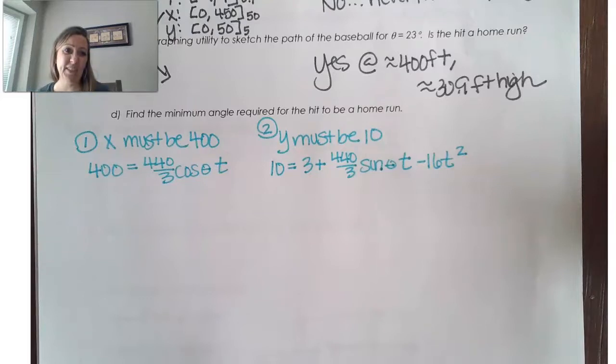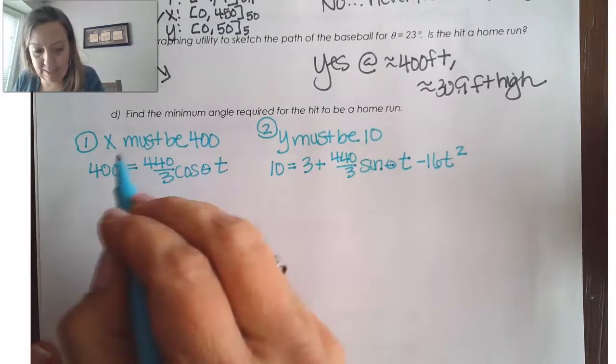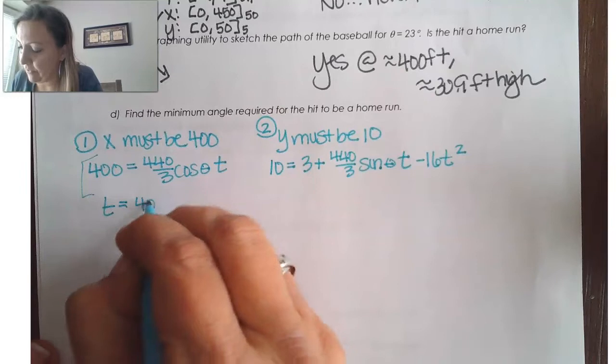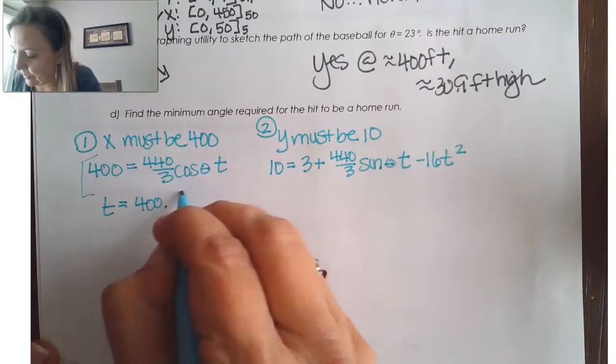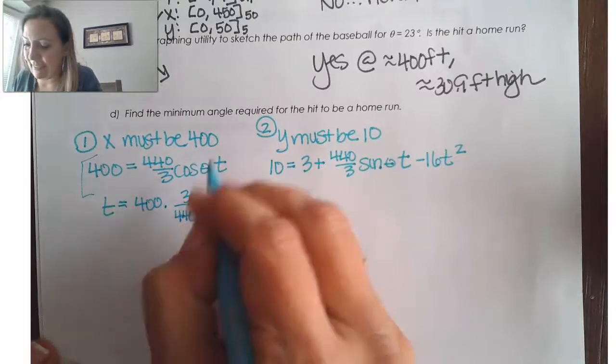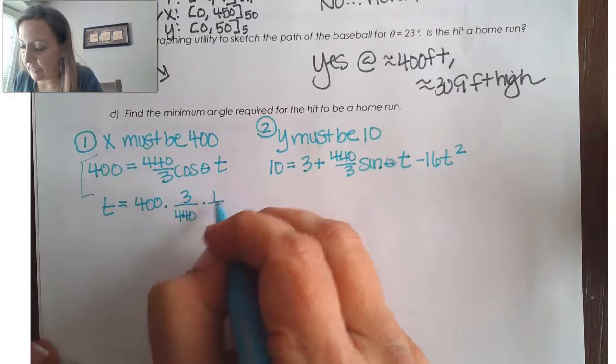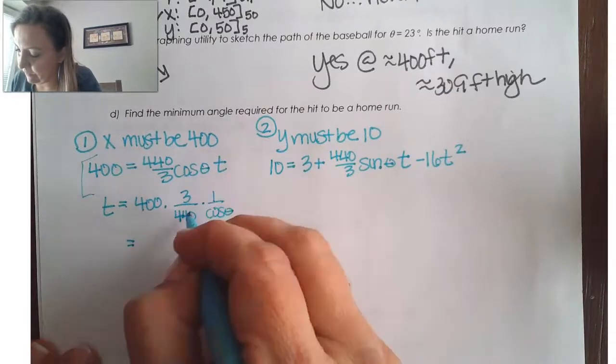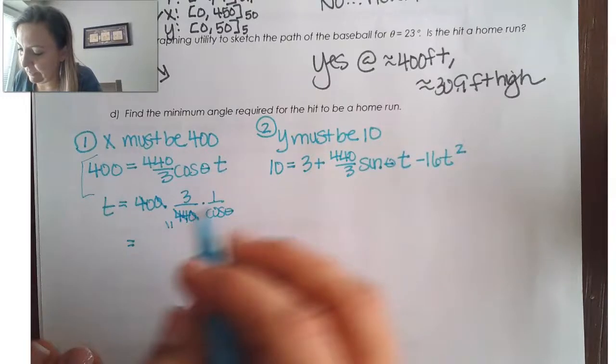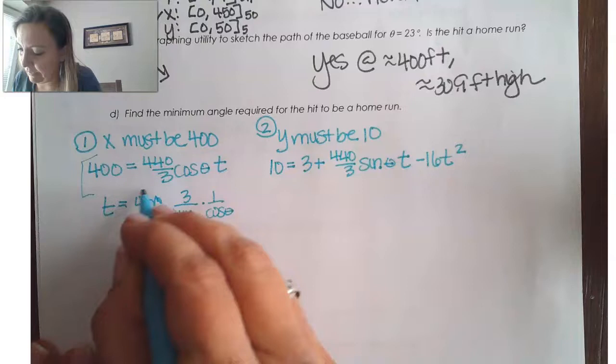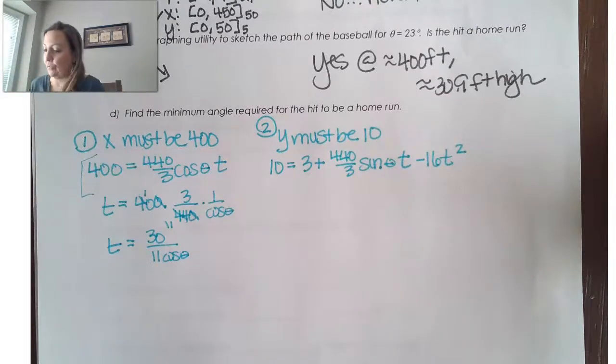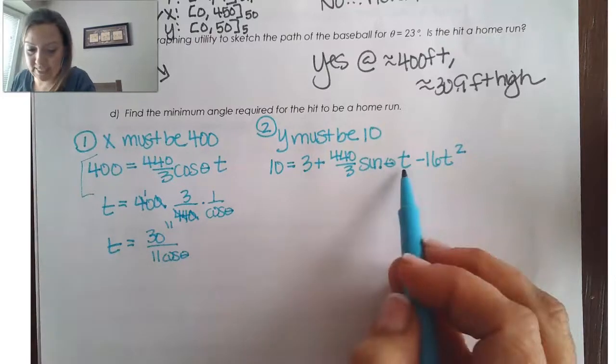So, that means that 10 equals 3 plus 440 over 3 sine theta t minus 16t squared. Well, obviously, this is the case where we're going to have to eliminate the parameter, right? So, let's isolate t here. So, if I do that, I need to multiply both sides by this reciprocal. So, 3 over 440. And then, basically, I'm multiplying by 1 over cosine theta as well. So, this ends up giving me, this ends up giving me 3, so 30 over 11 cosine theta. So, that's what my t is.